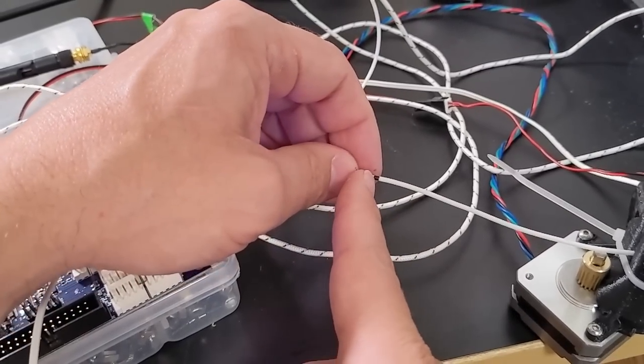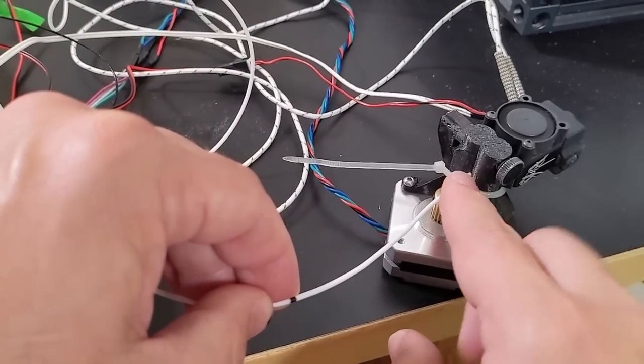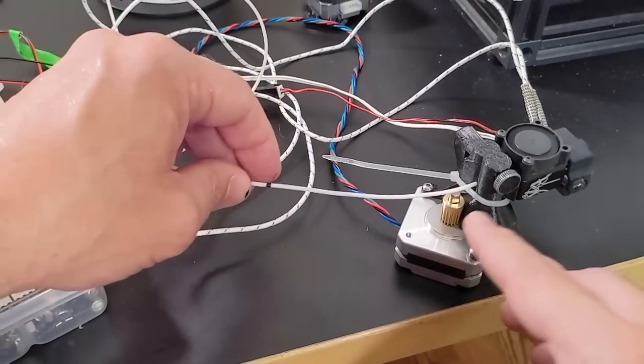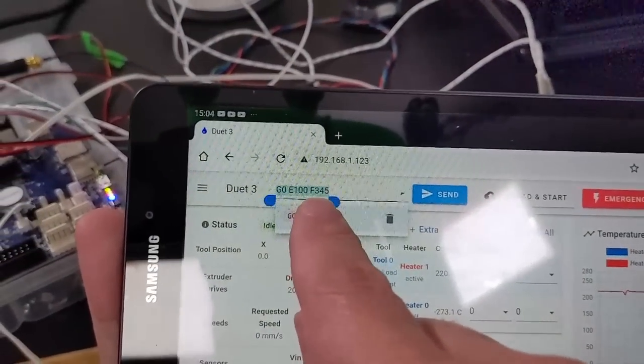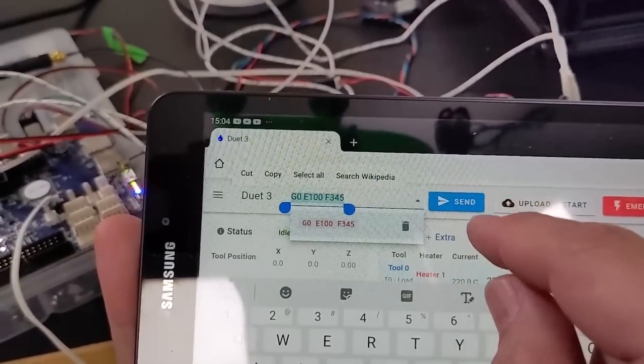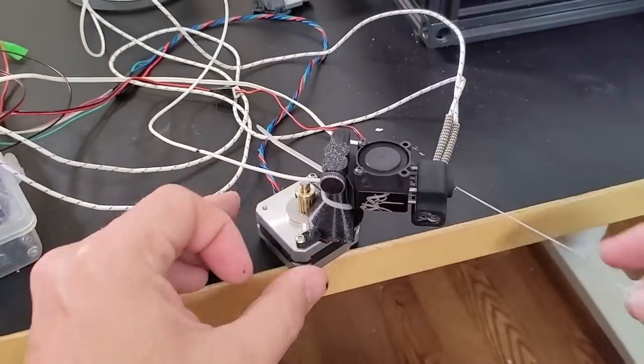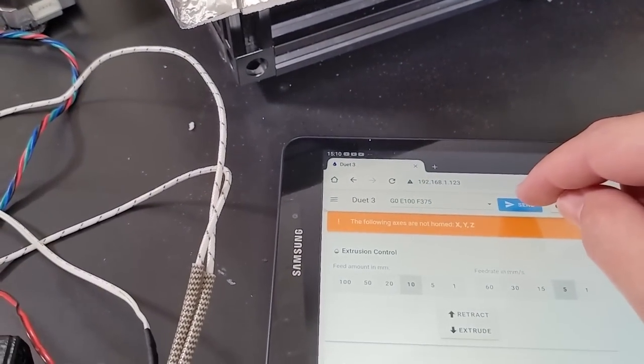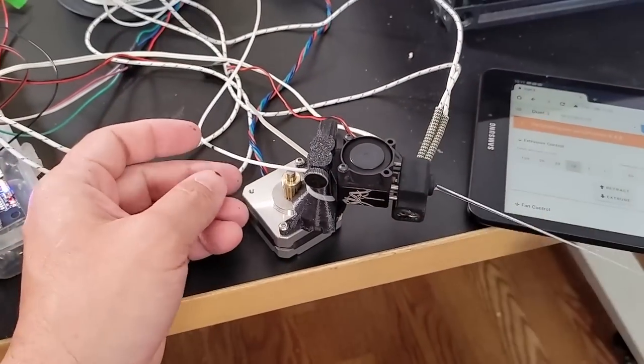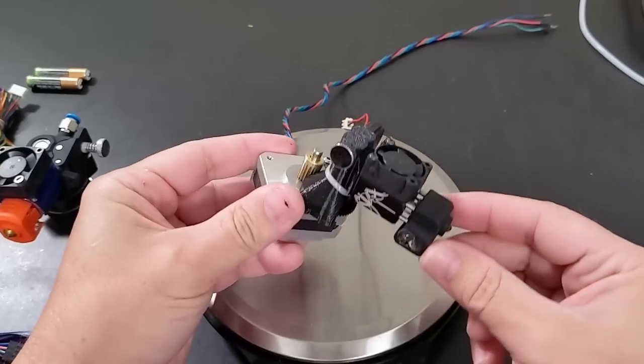The black line has been marked. We need to completely bury the black mark inside the extruder so we can't see it anymore. That will be 100 millimeters exactly. Let's do that at a feed rate of 345 millimeters per minute. That's a success. Let's try it again at a feed rate of 375. Looks like we missed a few steps but not very many.